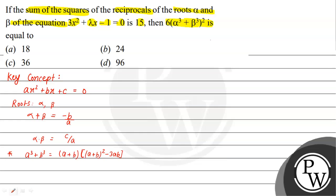The given equation is 3x² + λx - 1 = 0 with roots α and β. Applying Vieta's formulas: the sum of roots is α + β = -b/a = -λ/3, and the product of roots is α × β = c/a = -1/3.